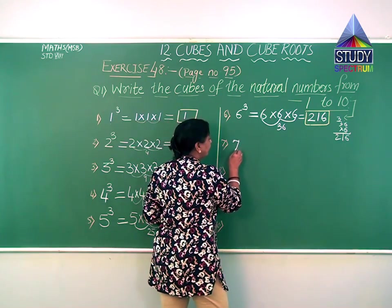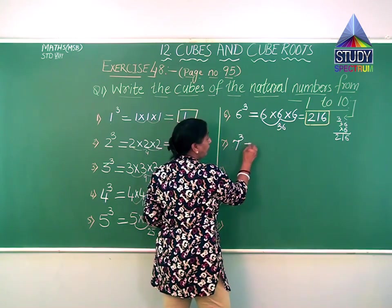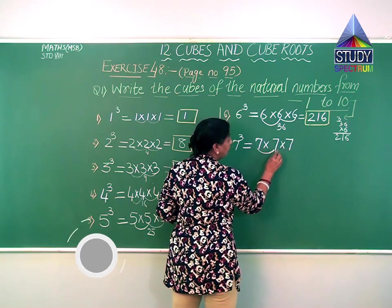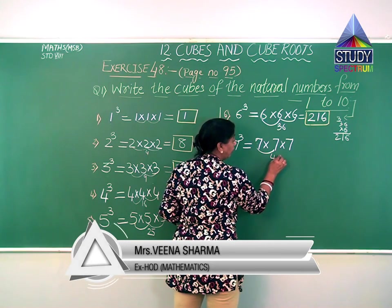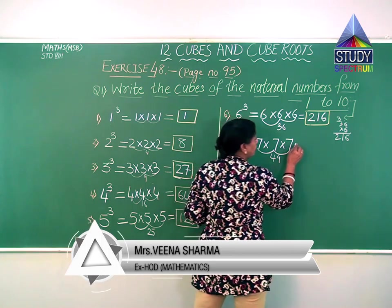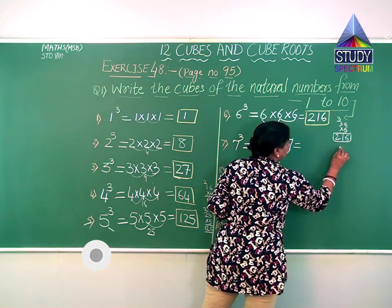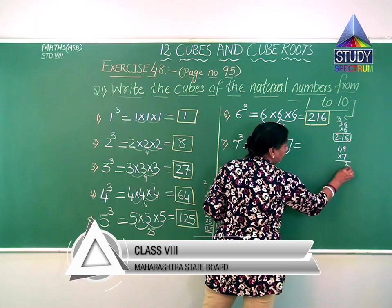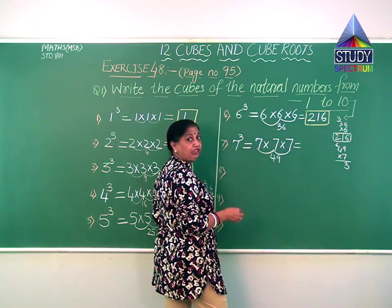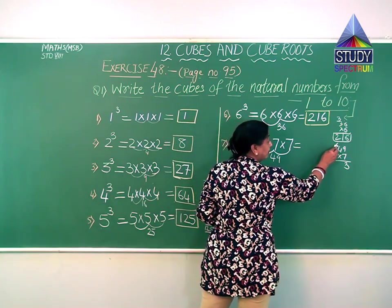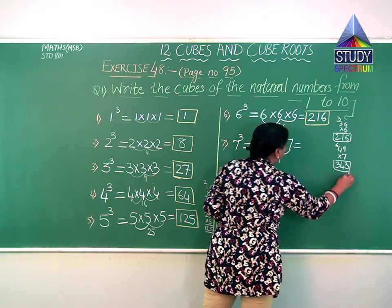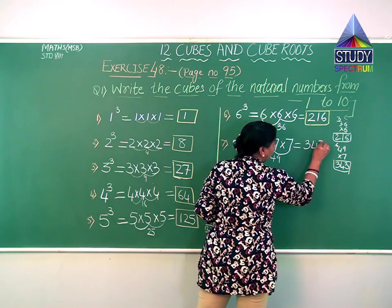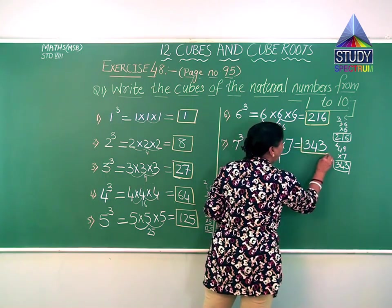The next natural number is 7. To find the cube, I write raise to 3, then multiply 7 into 7 into 7. 7 into 7 is 49 — that is the square. Now 49 into 7: working — 7 threes are 63, carry 6; 7 fours are 28, 28 plus 6 gives 34. So the cube of 7, when we multiply 3 times, the product is 343.